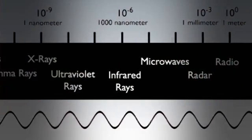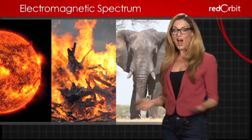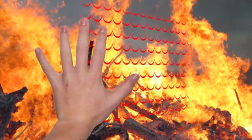Next comes infrared light. The sun, fire, living creatures, and other heat sources all produce infrared light. While we cannot see infrared light, we feel it as heat.